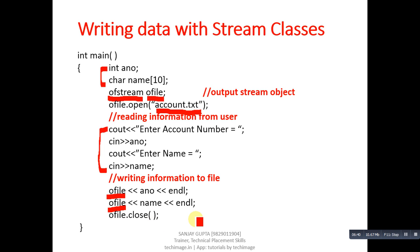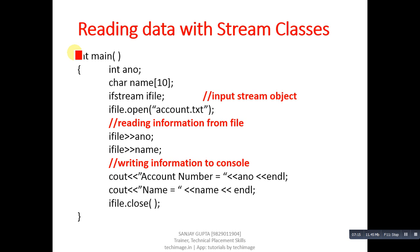Then ofile.close closes the file. The information received from the user is stored inside account.txt permanently. Through your compiler you can open account.txt by going into the file menu and open option, then typing account.txt. That file will contain the account number and name of the person received from the console. This program reads information from console and writes it to hard disk permanently.